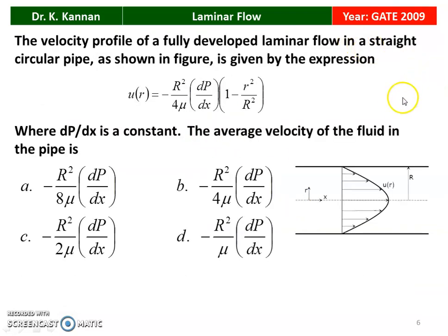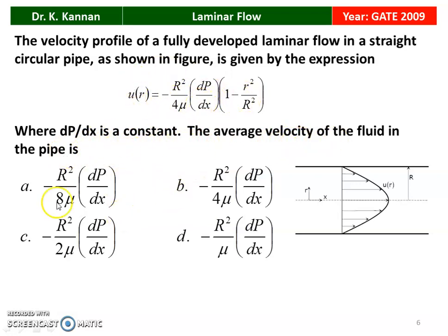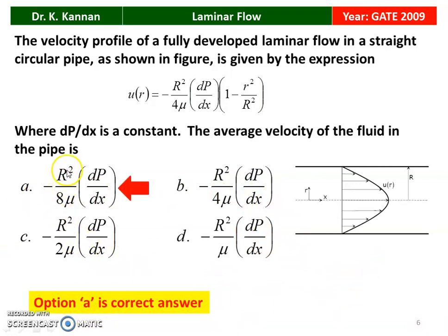Next question from GATE 2009: the velocity profile of a fully developed laminar flow in a straight circular pipe is given as u(r) = −r²/4μ · ∂p/∂x · (1 − r²/R²), where R is the outer pipe radius, r is the radial distance from center, ∂p/∂x is the pressure gradient, and μ is the absolute viscosity. We need to find the average velocity. Among the four options, option A is correct.